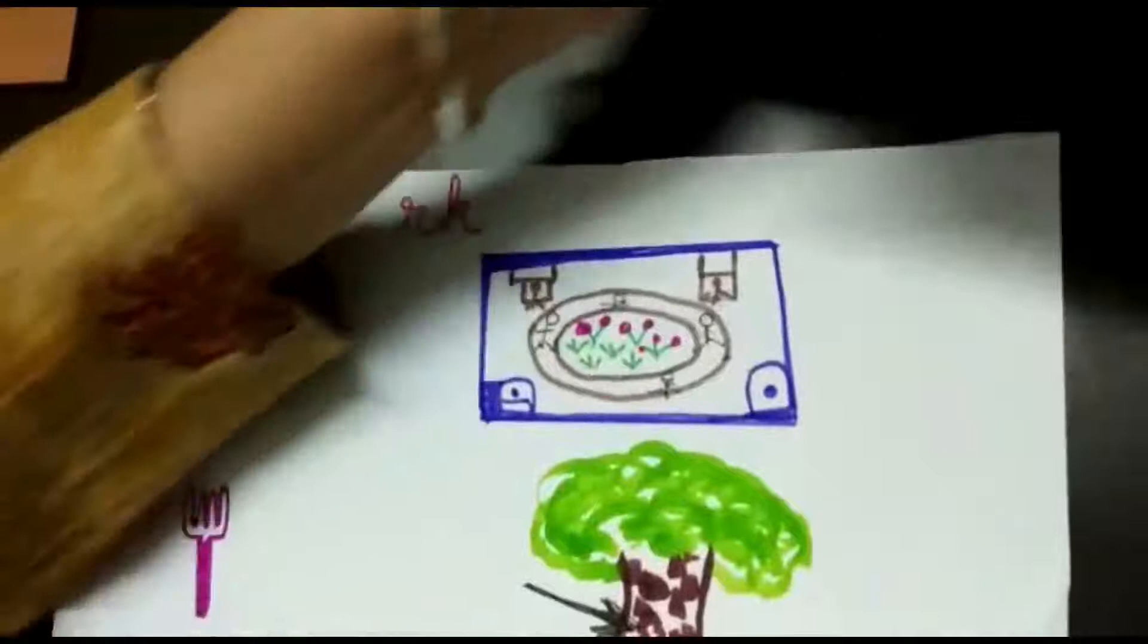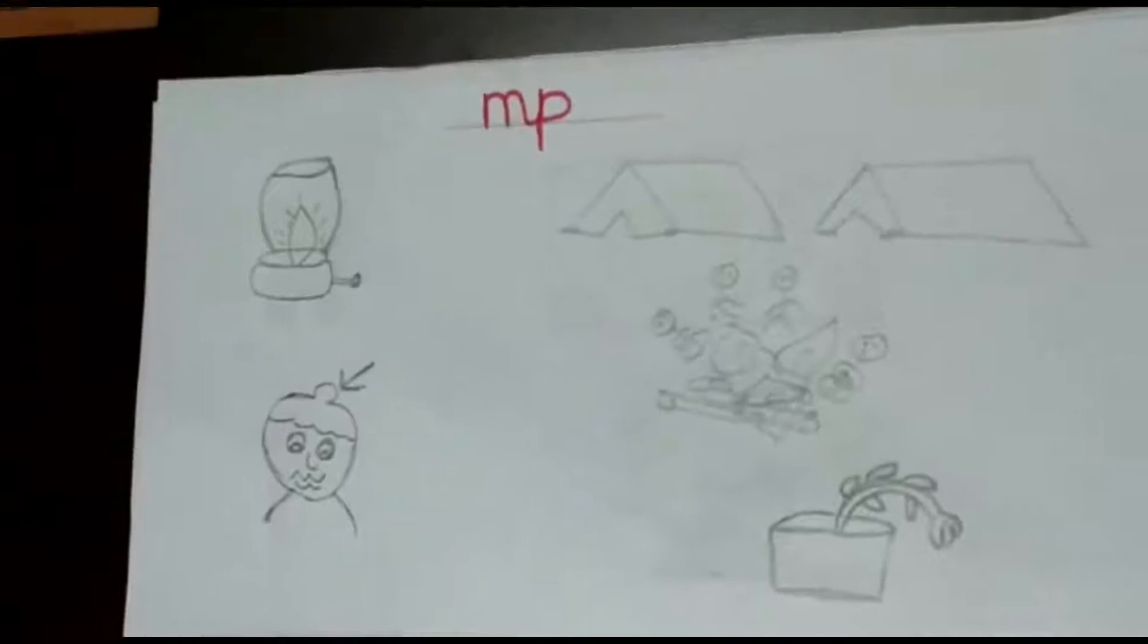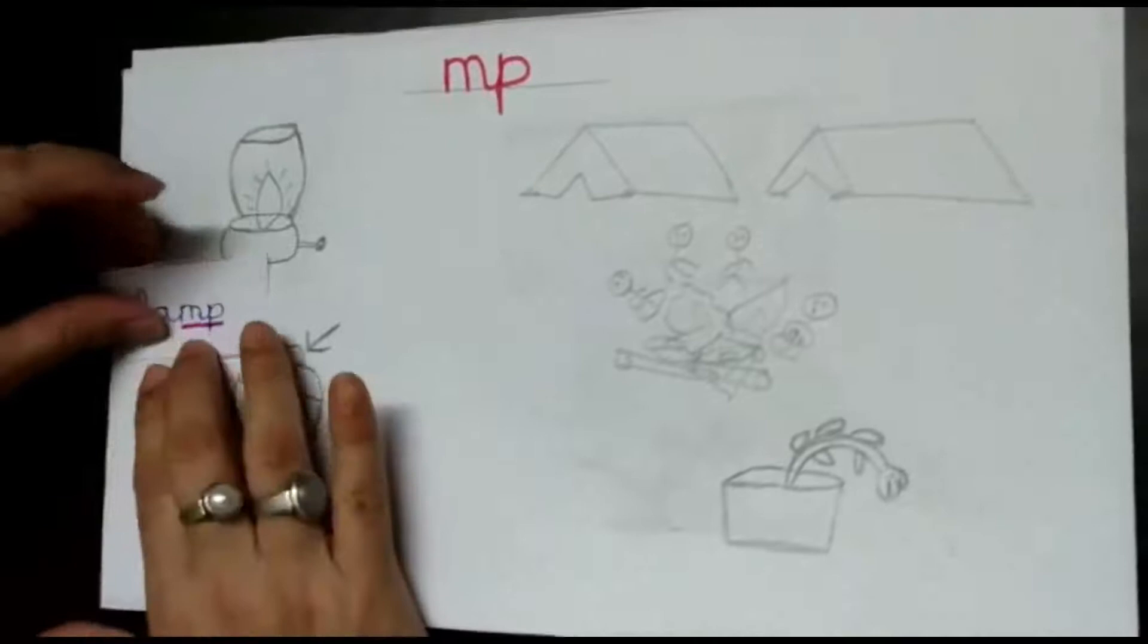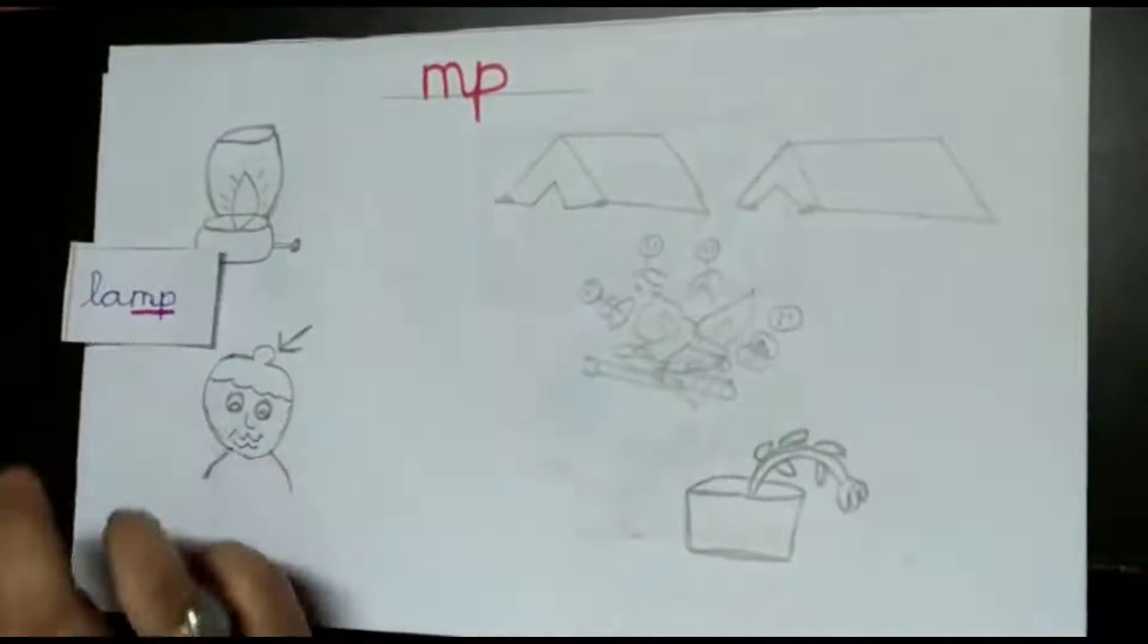Here you see these are pencil sketches. Can you tell me the first word? This is the lamp, and this is mp, mp lamp. Then you have, when you get a bang on your head or you fall down, you can see the arrow: bump, bump.